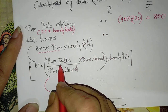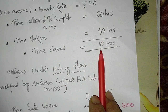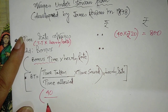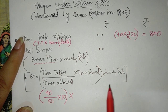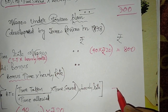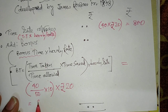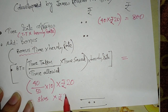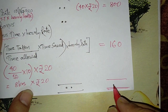Bonus time under Rowan plan = (time taken ÷ time allowed) × time saved = (40 ÷ 50) × 10 = 8 hours. Bonus = 8 hours × Rs. 20 = Rs. 160. Therefore, total wages under Rowan plan = Rs. 800 + Rs. 160 = Rs. 960.